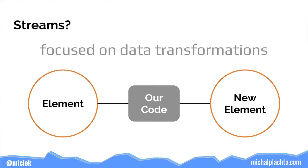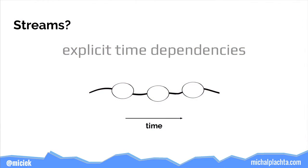You just have an element and a piece of code — basically a function — which transforms it into a different element. This helps programmers fight their worst enemy: time. Whenever you're programming using streams, you focus not on what just happened or what will happen next, but on what is happening right now. This way, time is explicitly specified inside the stream.